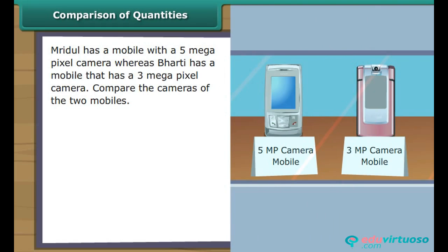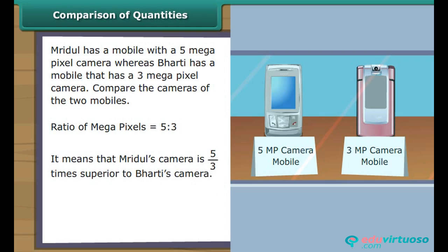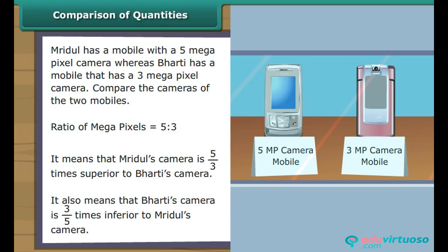Comparison of quantities: Mridul has a mobile with a 5 megapixel camera, whereas Bharti has a mobile with a 3 megapixel camera. Let us compare the cameras with the help of ratio. We express the ratio of the megapixels as 5 is to 3, meaning Mridul's camera is 5/3 times superior to Bharti's camera, and Bharti's camera is 3/5 times inferior to Mridul's camera.